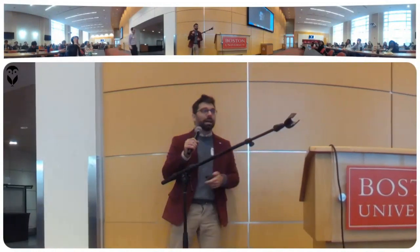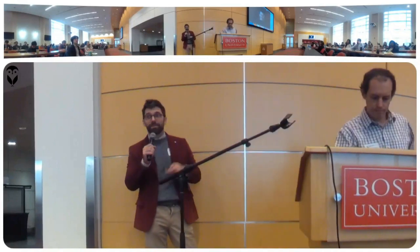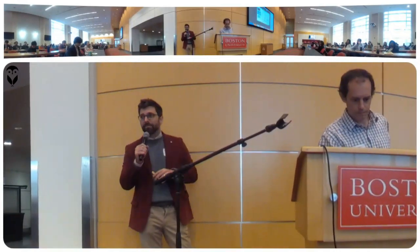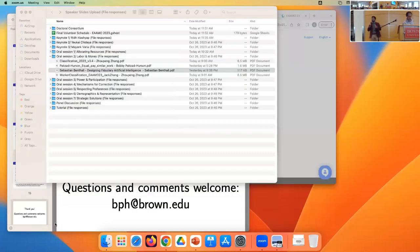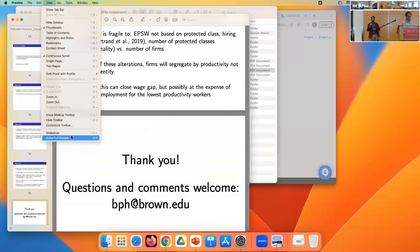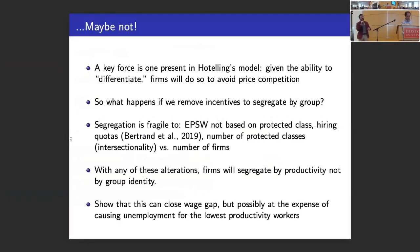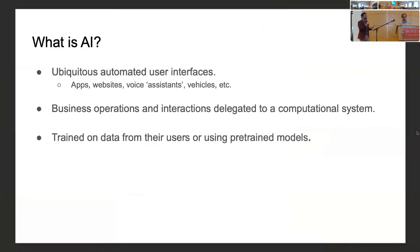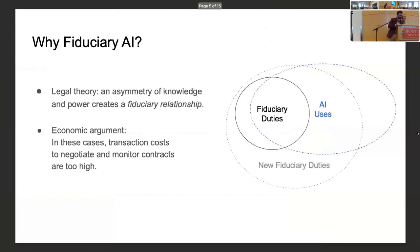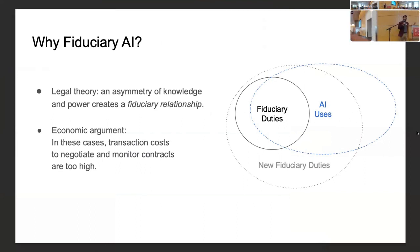There are two reasons why you might want fiduciary duties for AI. First, there are currently fiduciary duties in place. There are sectors of the economy governed by this legal regime, and if you were to deploy AI into those sectors, you would be covered by those laws and would need to know how to comply with them.